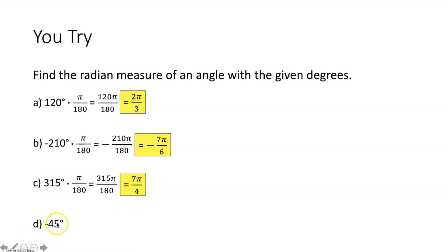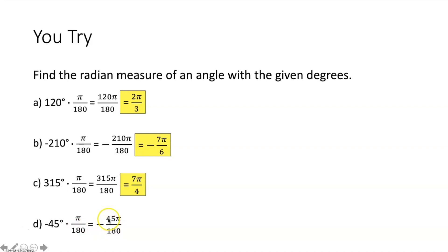Lastly, we want to convert negative 45 degrees to radians. We multiply by π over 180. Imagining negative 45 as over 1, multiply numerators and denominators together and simplify. 45 over 180 simplifies down to 1 over 4. Therefore, negative 45 degrees is equivalent to negative π over 4 radians.